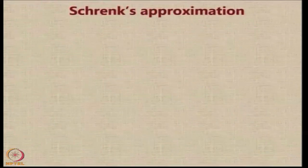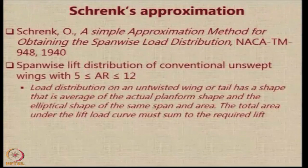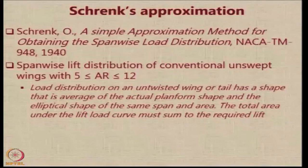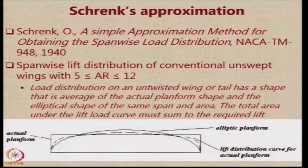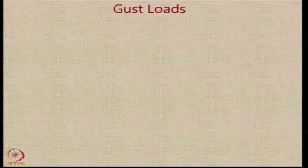To estimate the load distribution over a wing of a given planform, an easy approximation is the Schrenk's approximation. It is applicable only for conventional unswept wings with aspect ratio between 5 and 12. It states that the load distribution on an untwisted wing or tail has a shape that is the average of the actual planform shape and an elliptical shape of the same span and area, with the requirement that the total area under the lift load curve must sum to the required lift.